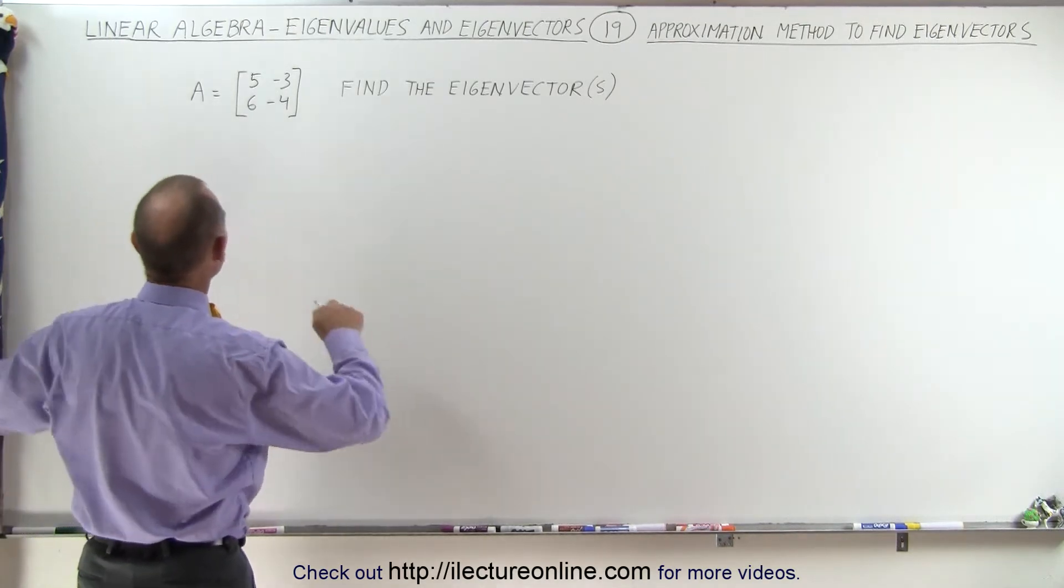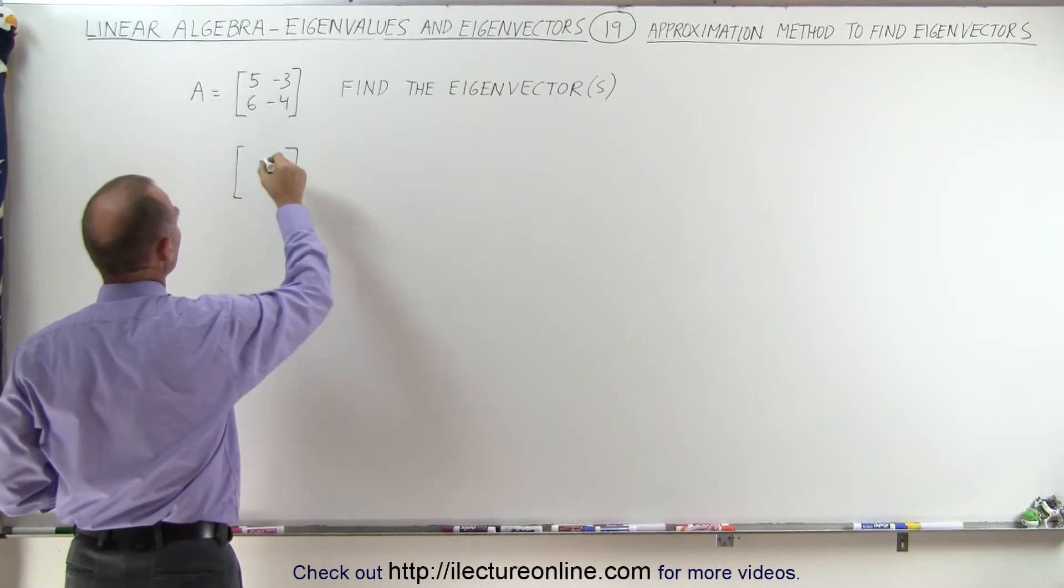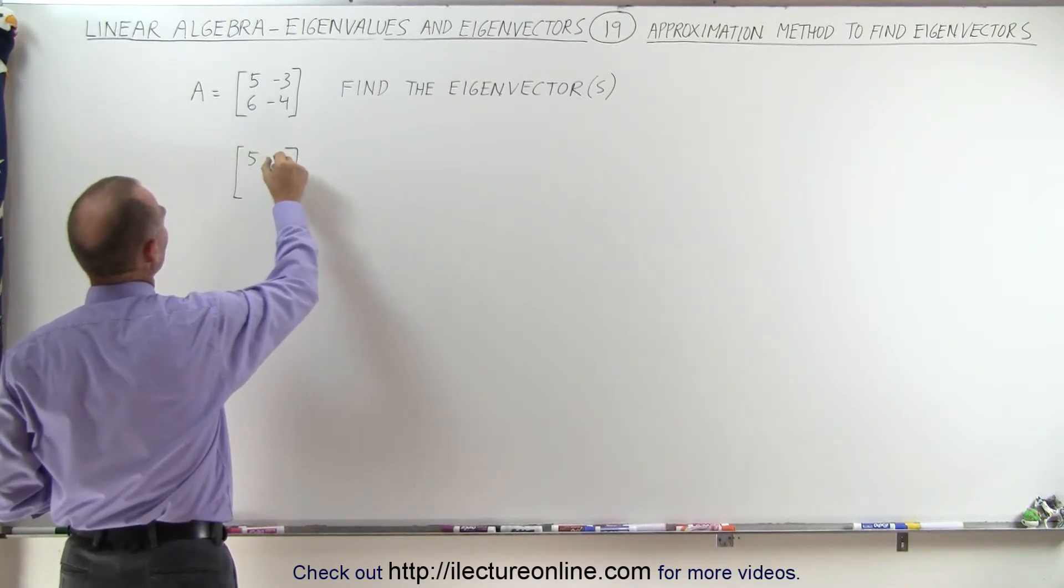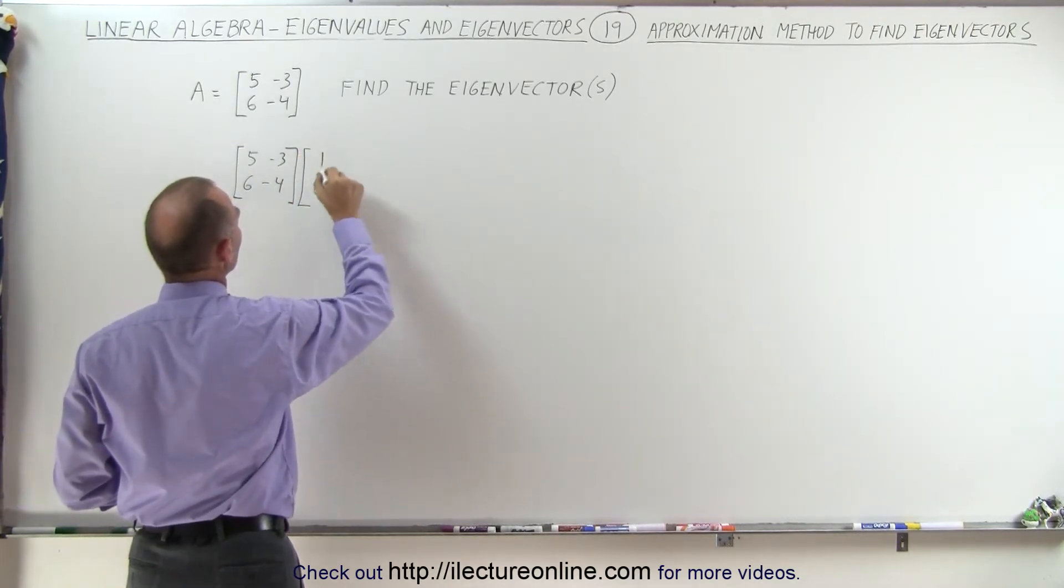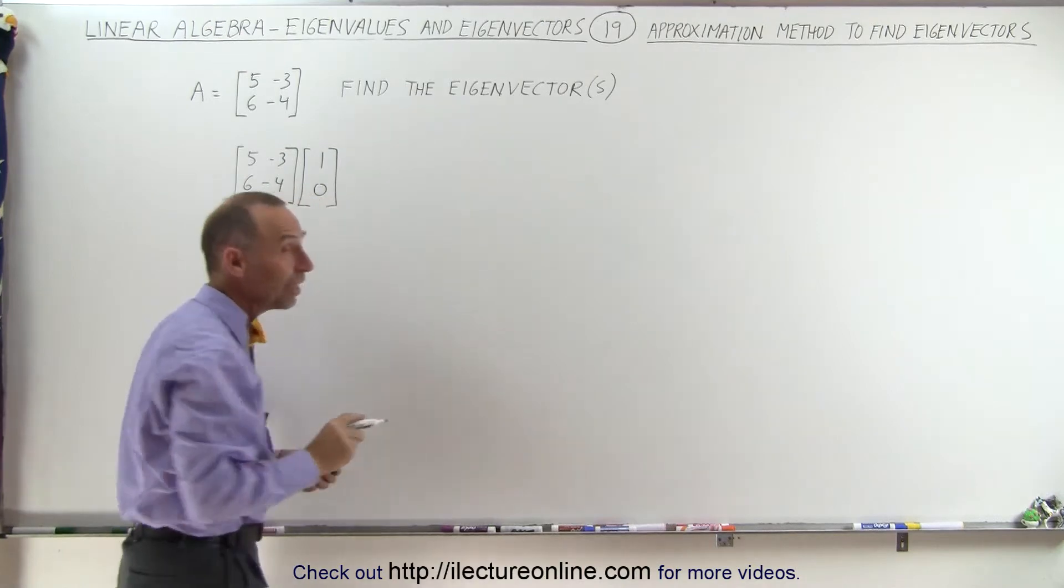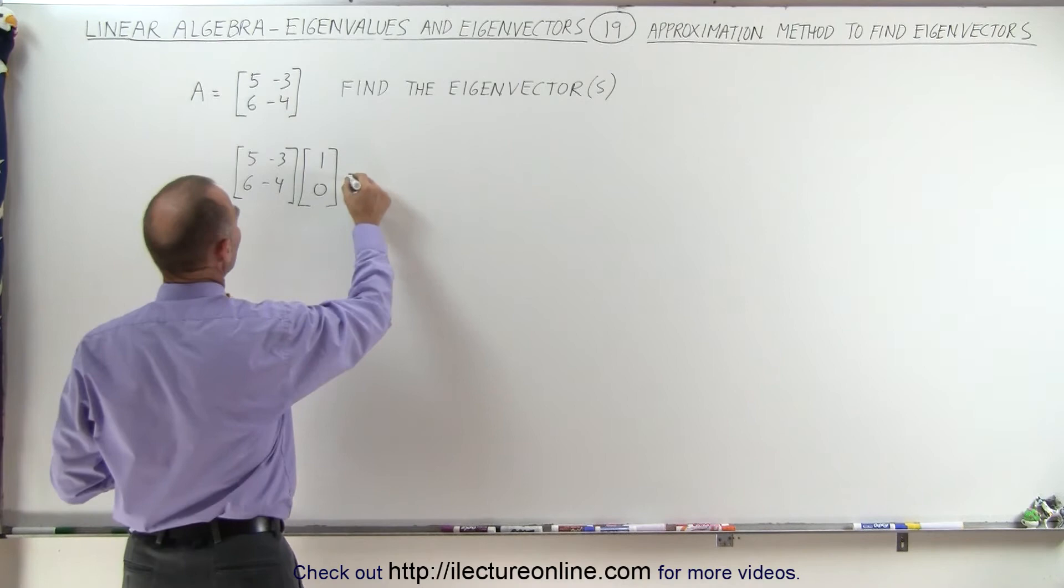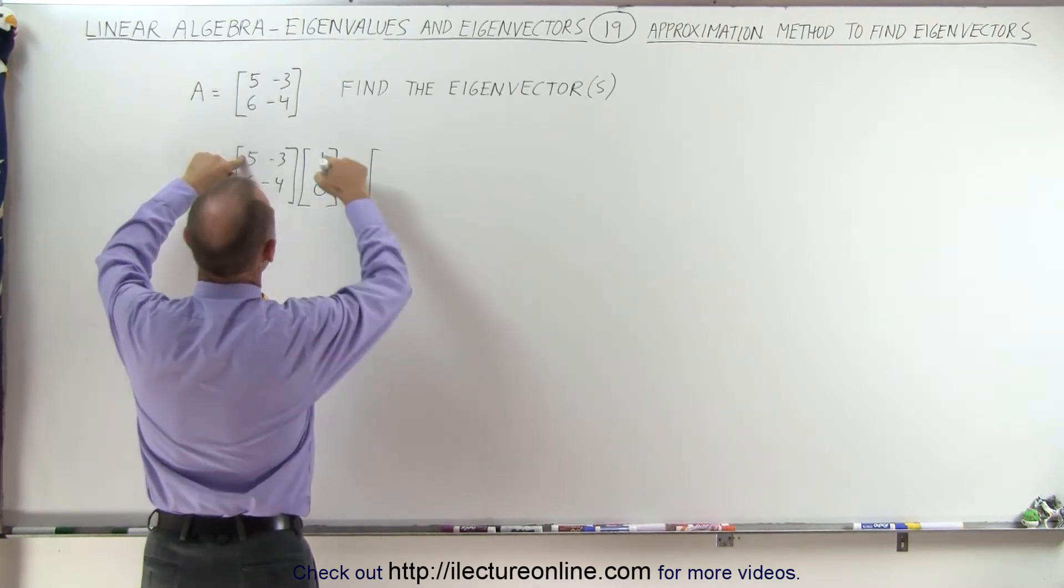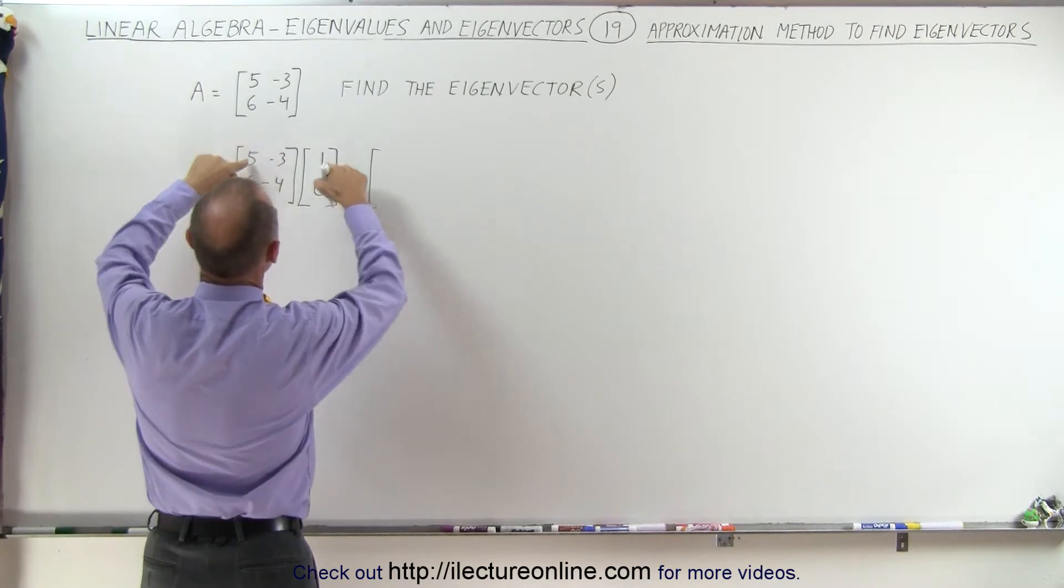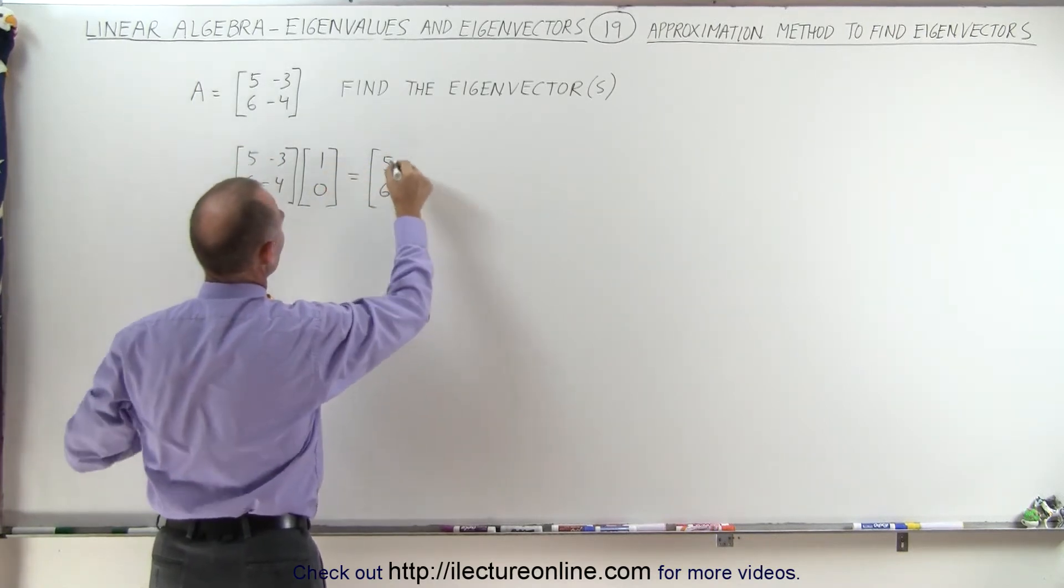The way we can do this is take the original matrix and multiply it times a starting matrix. So we'll start with 5, -3, 6, and -4 and multiply this matrix by a 1 times 0. Now that is not the eigenvector but let's see what happens when we multiply this. So this becomes the following, this becomes 5, so 5 plus 0, so there is 5 here and this becomes 6 plus 0 and a 6 here.